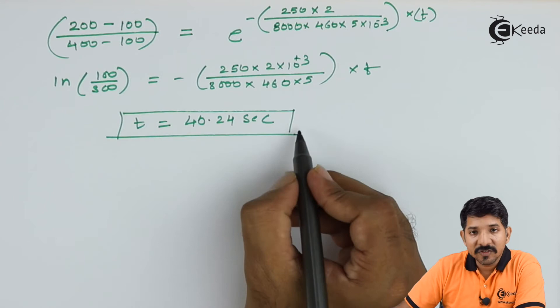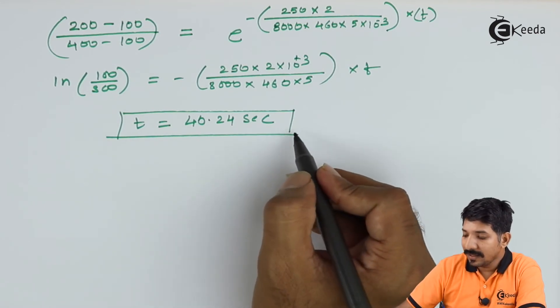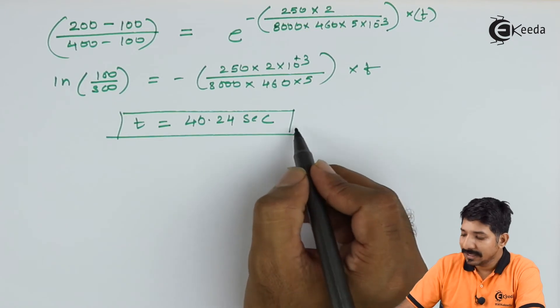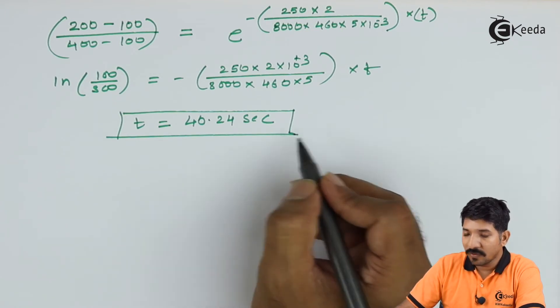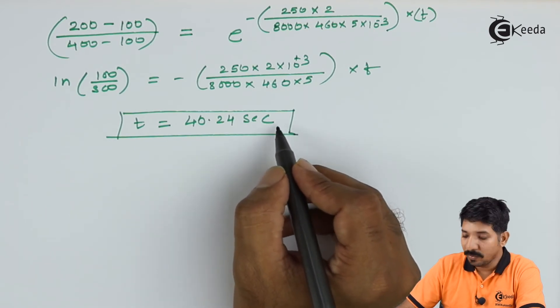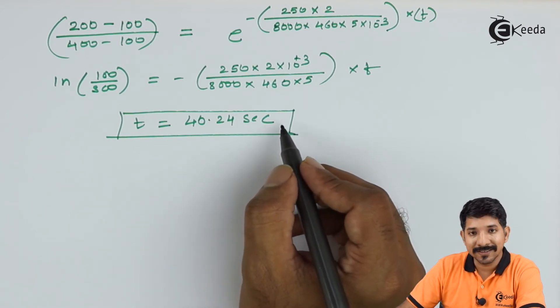Now this is the first part where they are asking if the lumped heat capacity analysis is applicable, then we can go for the calculation and find the time required for the rod to be cooled till 200 degree Celsius.